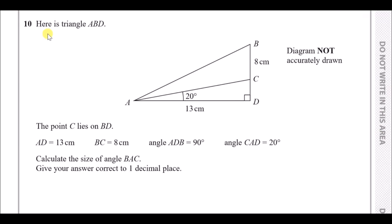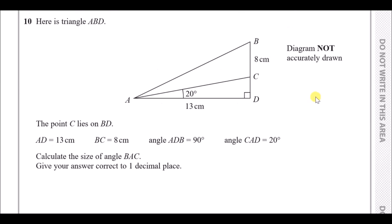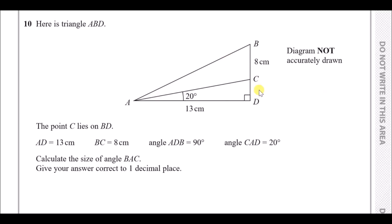Number ten: triangle ABD with point C on BD. Angle ADB is a right angle, angle CAD is 20°, and one side is 13. We need to find angle BAC. Treat this as two separate right-angle triangles. First, sketch the small triangle ACD: right-angled, angle at A is 20°, adjacent side is 13. We need to find the opposite side x.